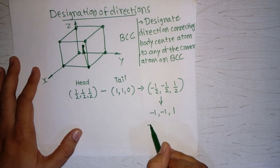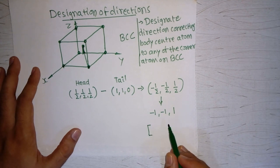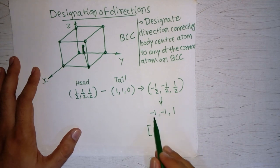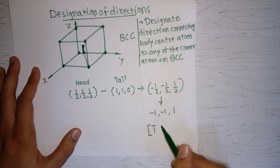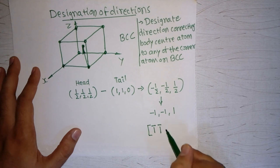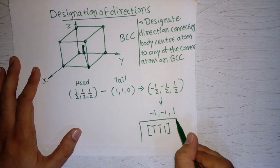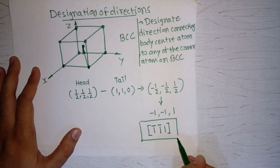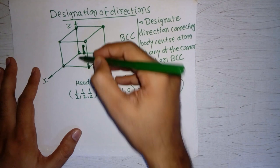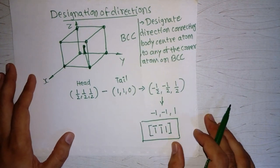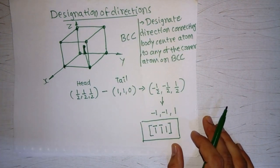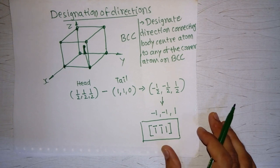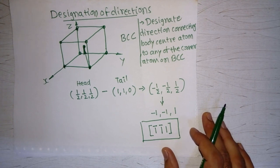We write these values in a square bracket without any separation, with negatives denoted by a bar. So this is bar-one, bar-one, and one. This is the direction. This way we can define different directions on any unit cell.